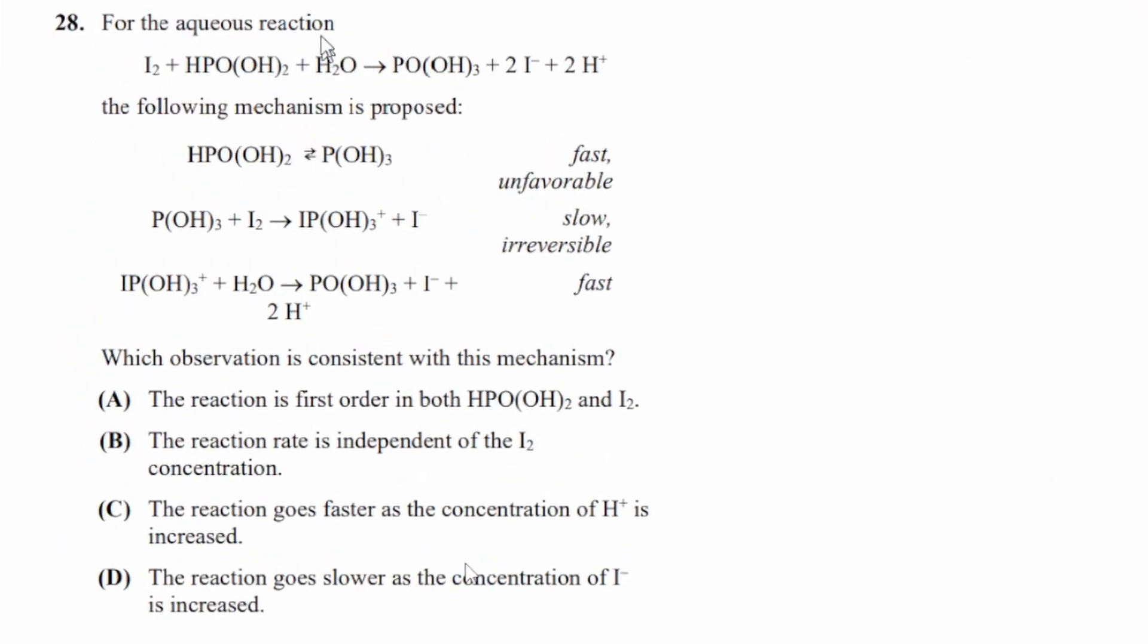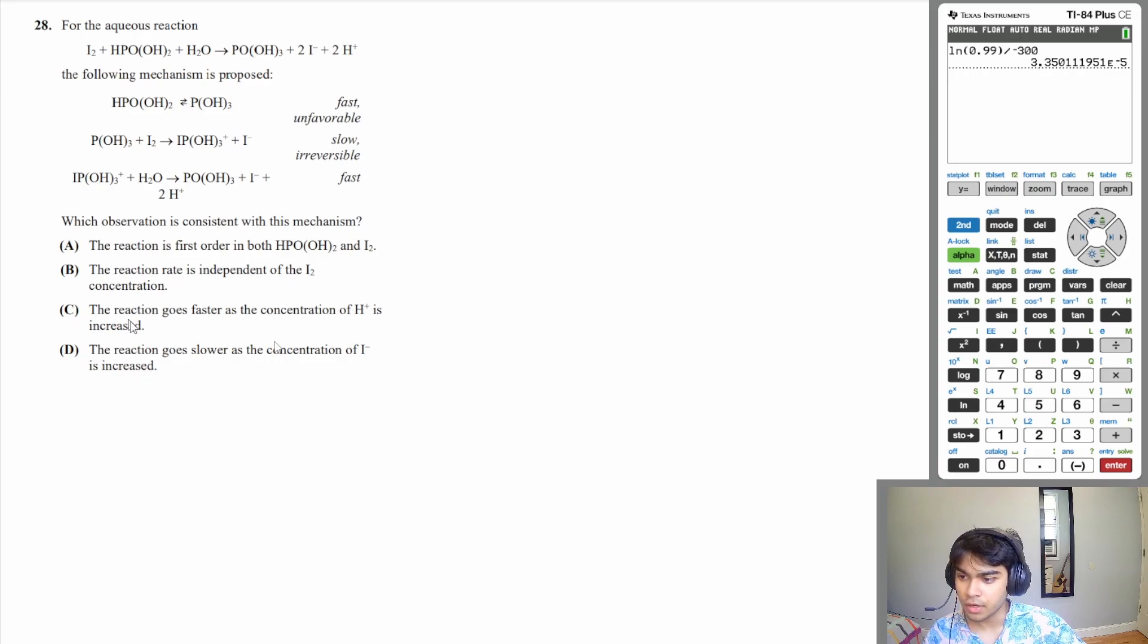Let's move on to question 28. For the aqueous reaction the following mechanism is proposed. Which observation is consistent with this mechanism? All the answer choices talk about the reaction and the rate law of the reaction. So let's determine the rate law of this reaction given this mechanism. The rate law is going to be dependent on the slowest step. The slowest step is going to be the step that determines your overall rate. So the rate of our slowest step, which is this one, is going to be that the rate is equal to K. Let's just call it K1 times the concentration of your POH3 to the first power, because there's a coefficient of 1 here, times your I2 to also the first power. The problem with this is that this POH3 is not actually part of your reaction. That is an intermediate. And as you know, we can't have intermediates in our rate law. So how do we get around that?